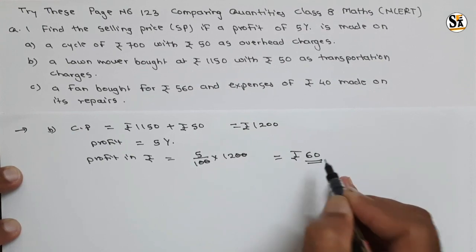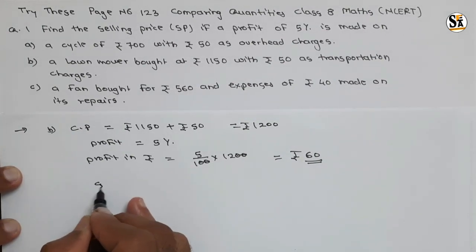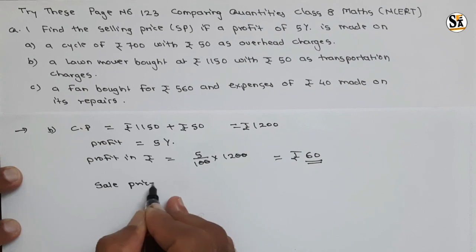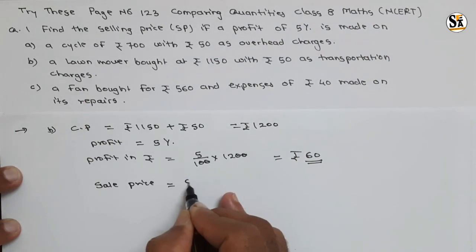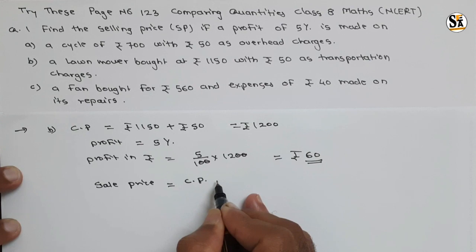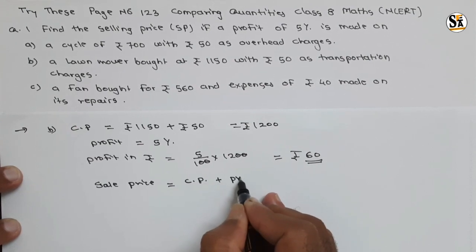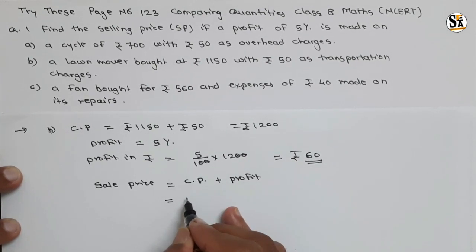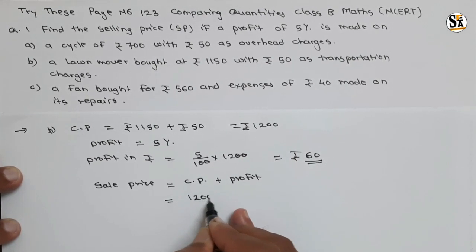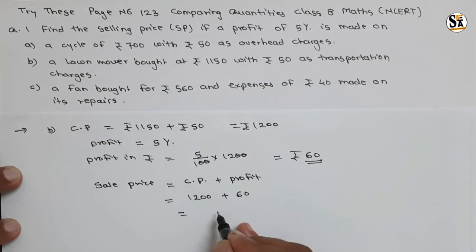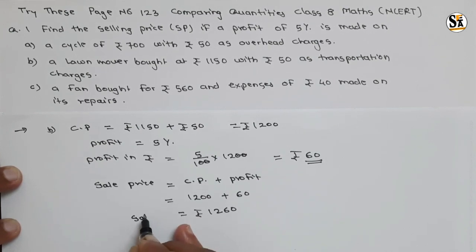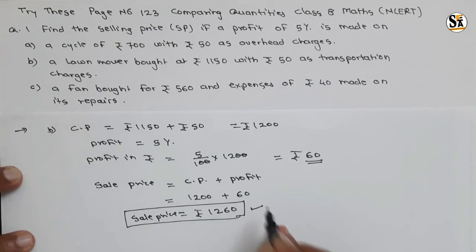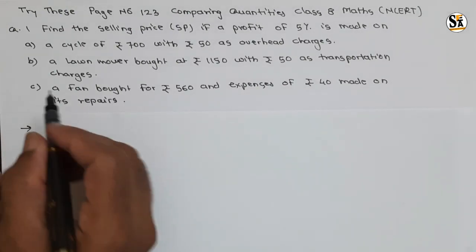Sale price is equal to cost price plus profit. Profit is always on cost price, so cost price is rupees 1200 plus profit is rupees 60. The answer will be rupees 1260. That is the sale price — our second answer.